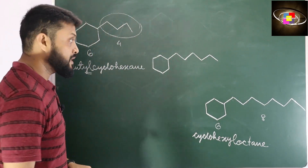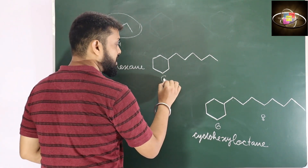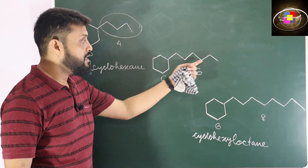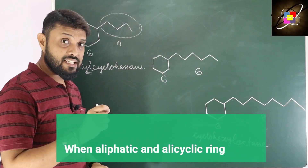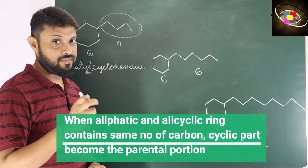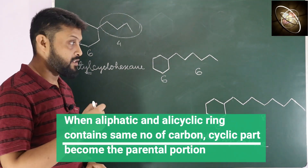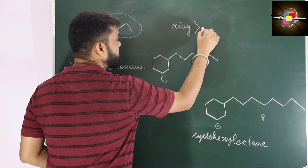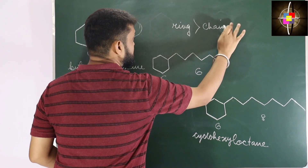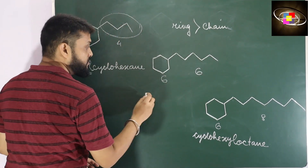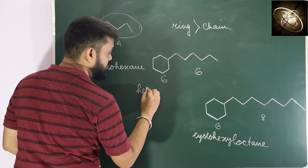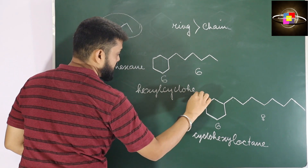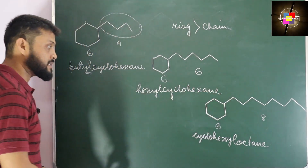Now moving to the middle one. Here we have 6 carbons in the chain and 6 carbons in the ring — an identical number. In that case, when you have an equal number of carbons in the aliphatic chain as well as in the cyclic portion, we give more priority to the ring. So the compound becomes hexylcyclohexane.